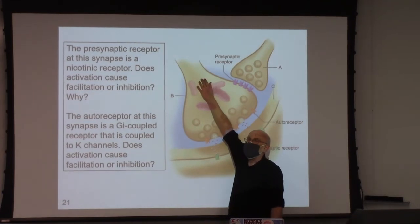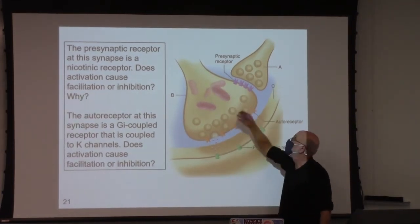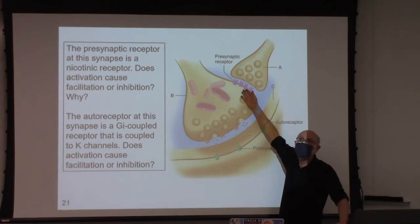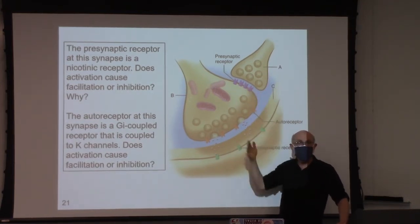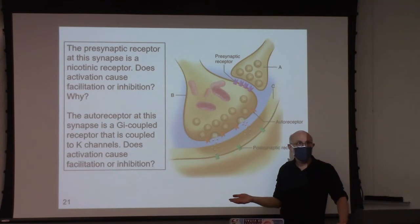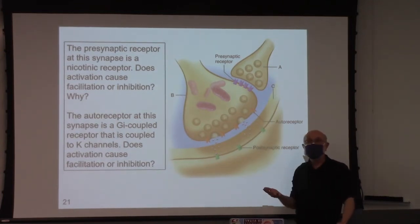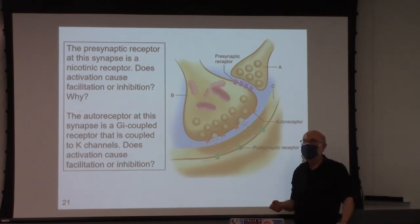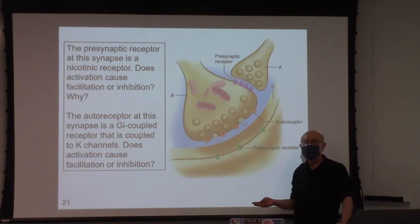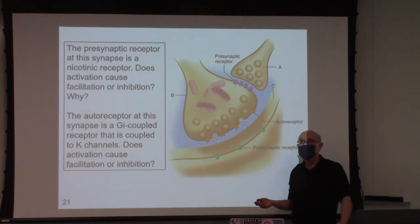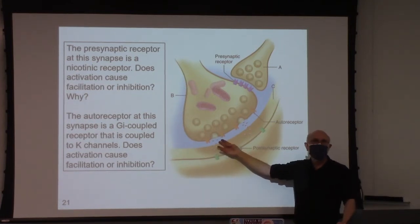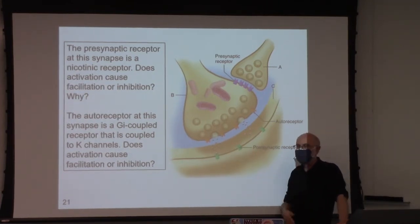Action potential depolarization summates with nicotinic receptor depolarization — more depolarization, more activation of voltage-gated calcium channels, more calcium influx, more calcium binding to synaptotagmin, more fusion, more neurotransmitter release. That is facilitation.